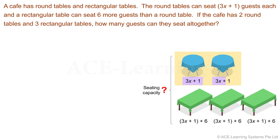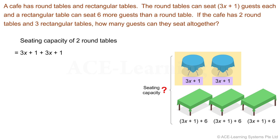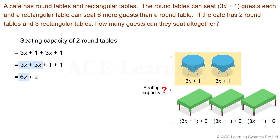For two round tables, it would be twice that. So we write: the seating capacity of two round tables is equal to 3x plus 1 plus 3x plus 1. Now let's simplify this expression — gather all the terms in x, then all the numbers. The terms in x add up to 6x, and the numbers add up to 2.